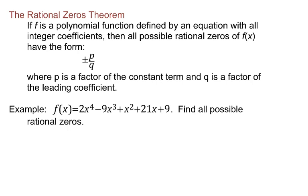Suppose you have f. If f is a polynomial function defined by an equation with all integer coefficients — so the polynomial function I have down here would fit in that regard — then all possible rational zeros of f(x) have a certain form. Let me circle this word 'possible.' This theorem is not going to tell us what all the rational zeros of a polynomial are; it's only going to tell you what they might be. Notice we also have the word 'rational,' which says this theorem won't tell us all the zeros — only the rational ones, the ones that are rational numbers, fractions.